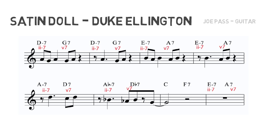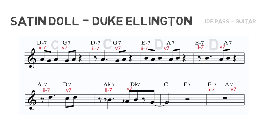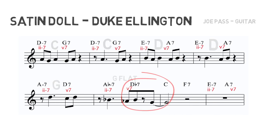As you may be able to see, this tune is littered with two-fives — they are literally everywhere. The D minor seven / G seven is from C; the E minor seven / A seven is from D major; A minor seven / D seven from G; and A-flat minor seven / D-flat seven is from G-flat.